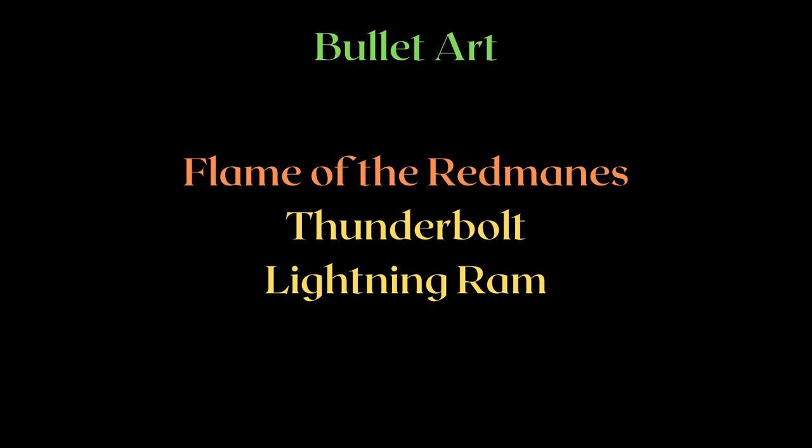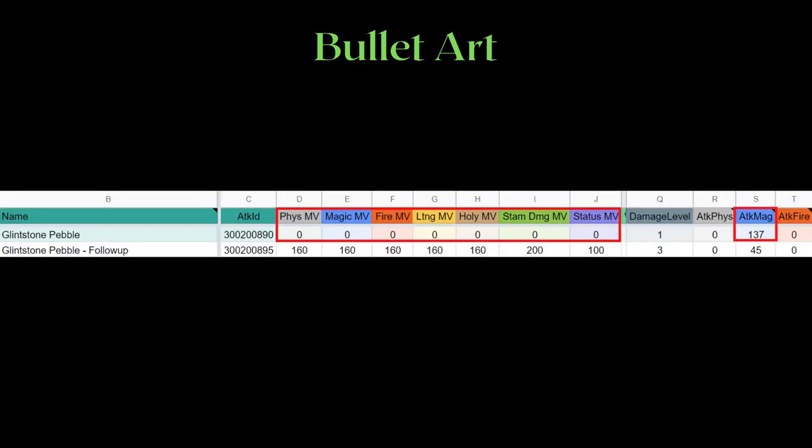Chapter 3: Welcome to bullet art hell. This is what makes weapon art calculation about as comprehensible to most of you as hieroglyphics. Thankfully, you're watching the Rosetta Stone right now. While the name implies shooting out bullets, not all projectiles are bullet arts and bullet arts can also be non-projectile attacks like Lightning Ram. To know whether or not a weapon art is a bullet art, check the MV sheet's left and right side values. If only the right side contains values, it is a bullet art, because bullet arts have absolutely nothing to do with your weapon's base AR.